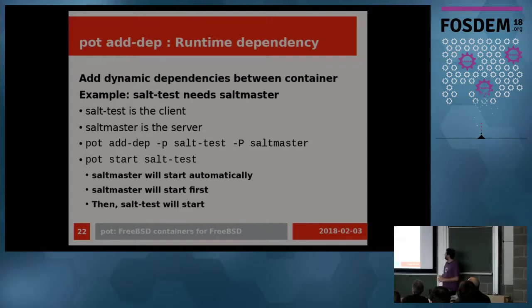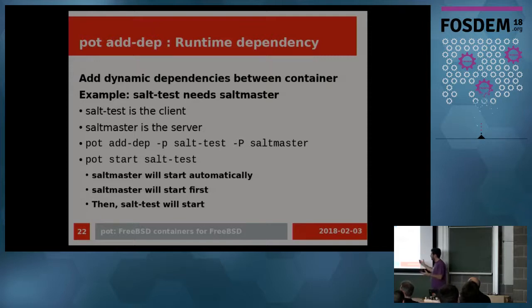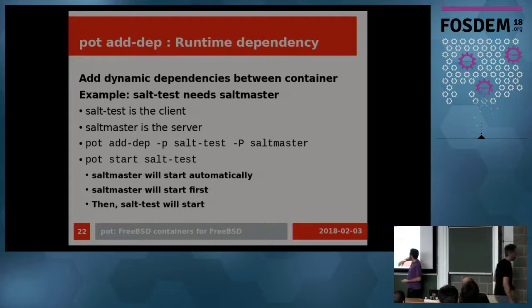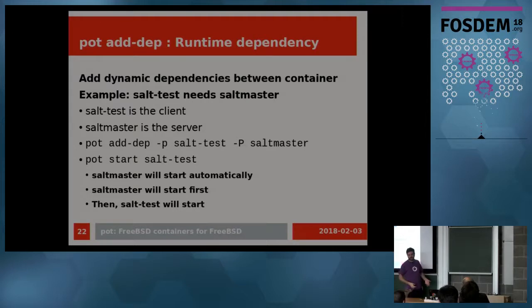There is an `add-dep` command that allows you to create a runtime dependency between different containers or pods. This is for client-server architecture: if you have a container as a server and a container as a client, you can add a dependency in the client to the server. For example, a salt-minion client used for testing depends on a salt-master server. When I start the salt test, it automatically checks if salt-master is already running — if yes, good; if no, it starts it, and then runs the client. So you can create a kind of order sheet inside it.